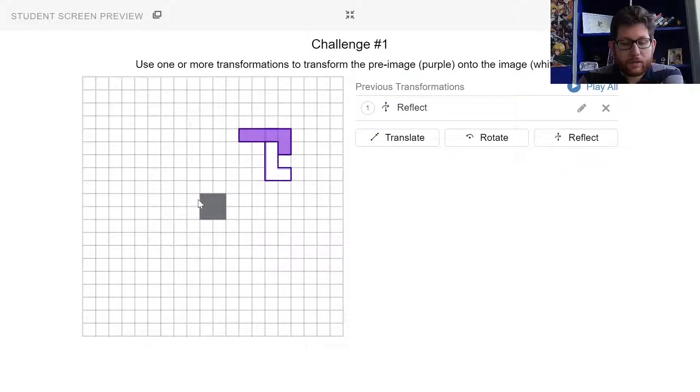Notice when I reflect it doesn't break the shape, so I can reflect over these obstacles but I can't rotate through them and I can't translate through them. I have to translate around or rotate around them, or I can reflect over them.